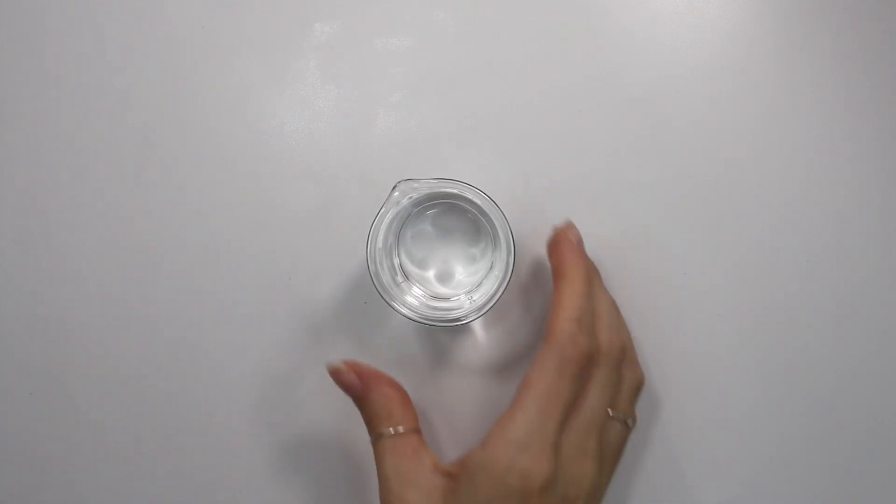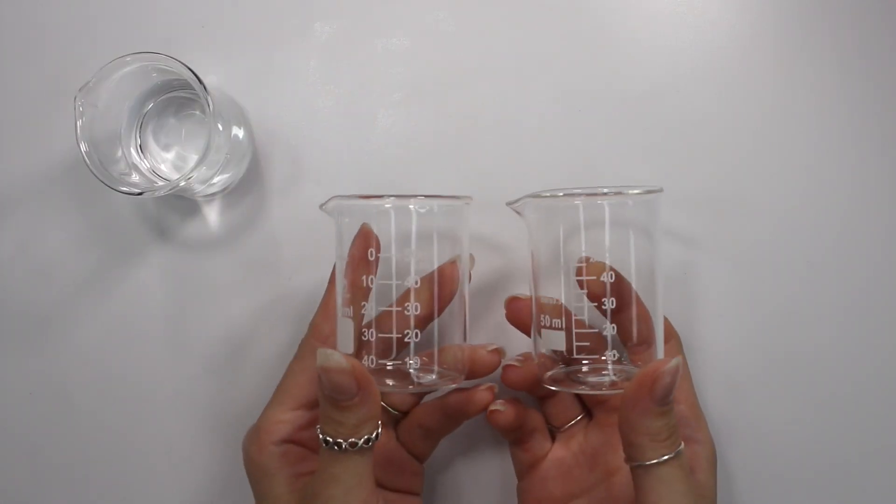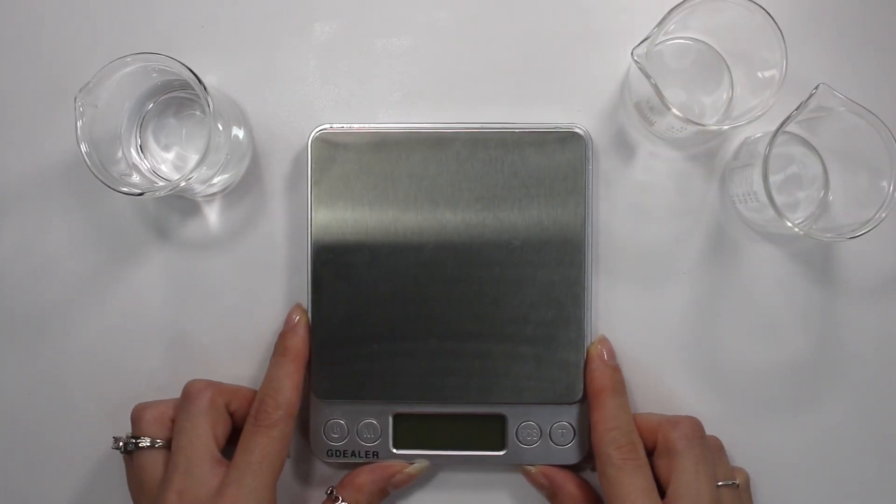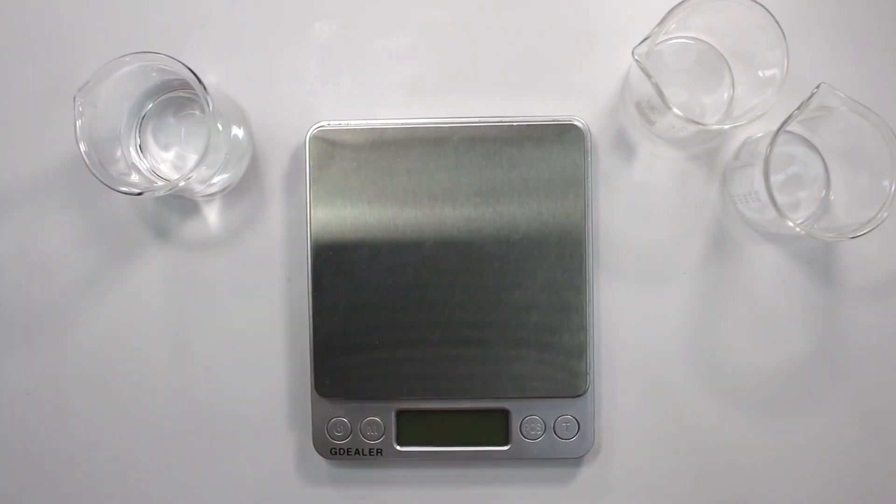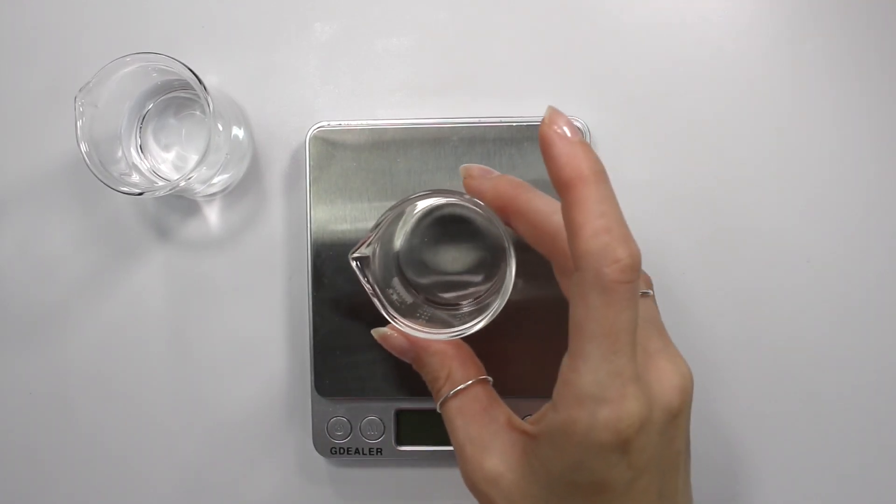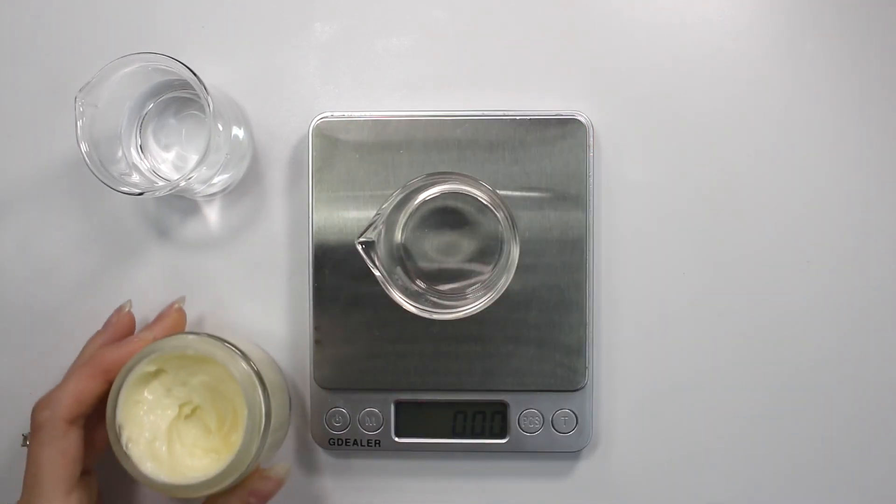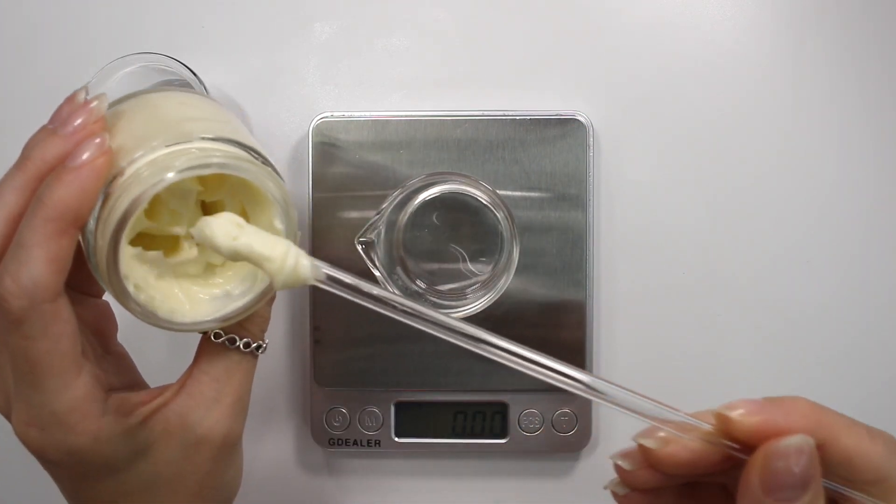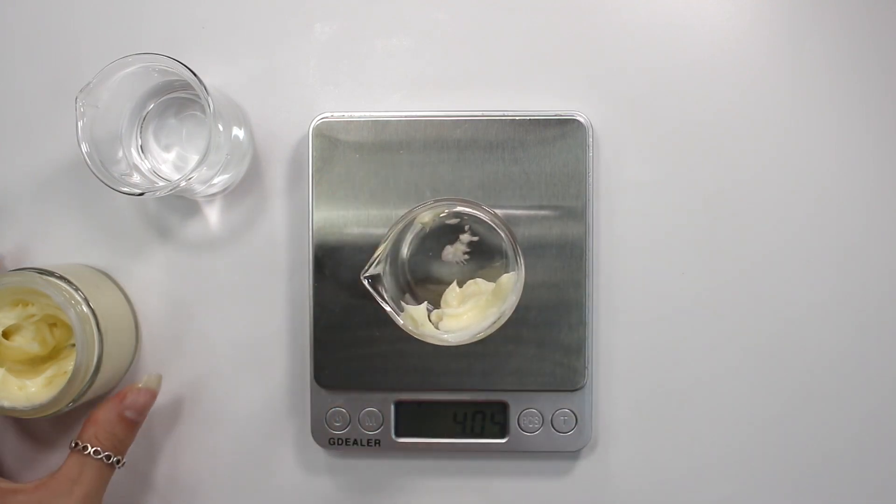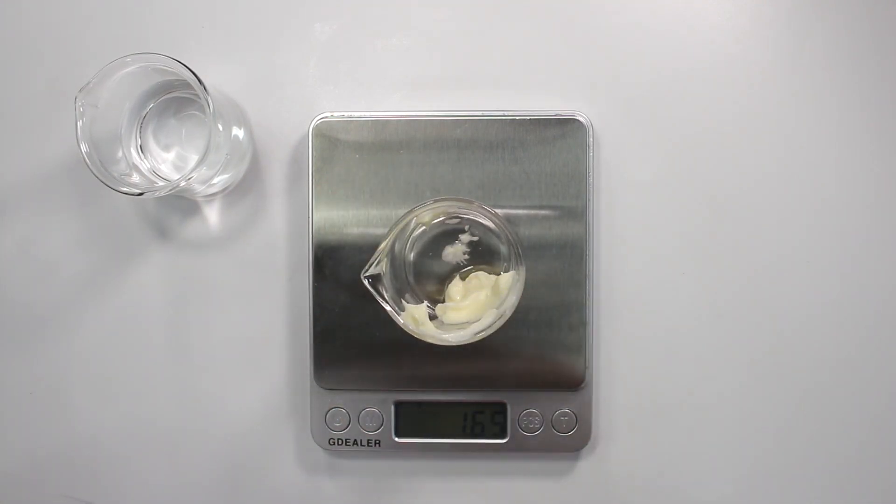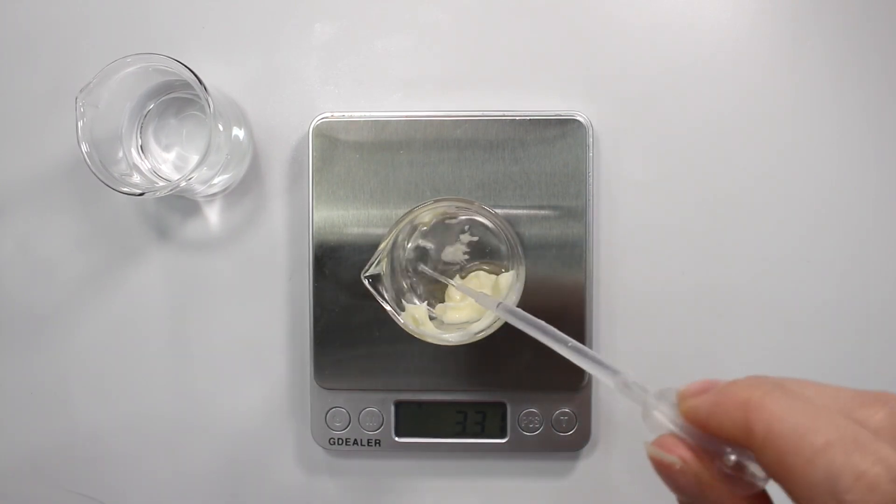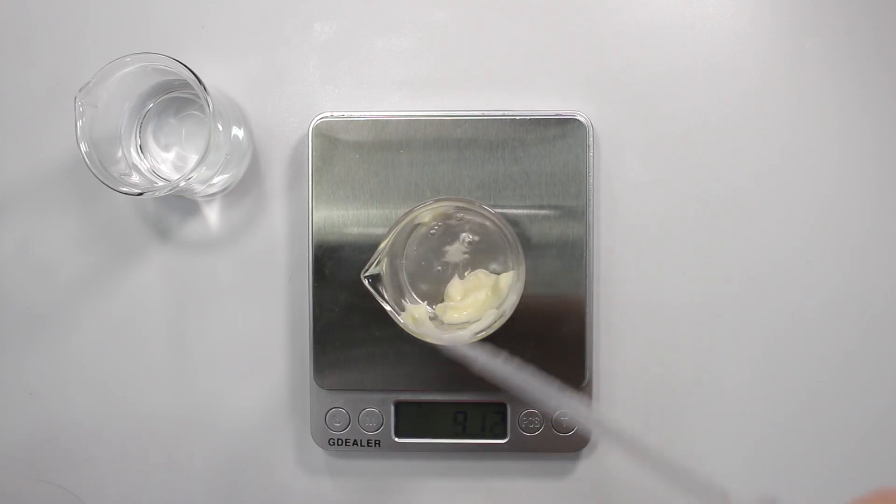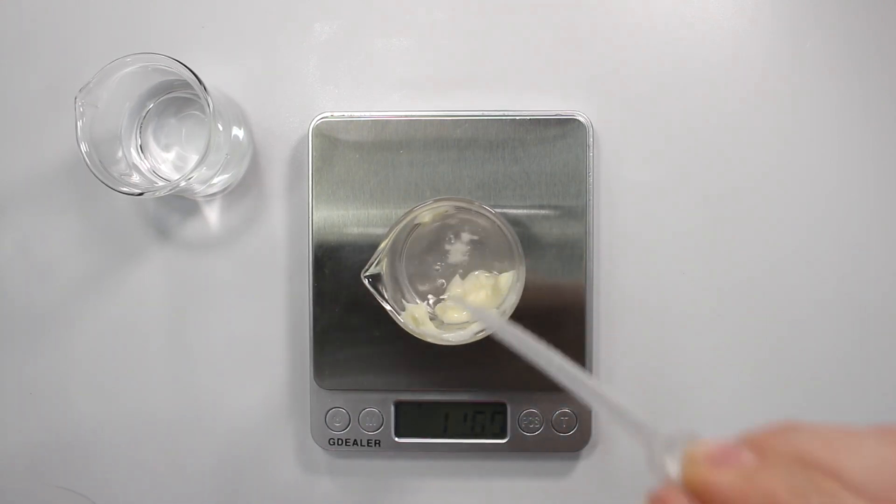So first you want to start off with just a small container, fill it with some distilled water. It can be your rinsing solution for your pH meters. And then I'm just going to be using a digital scale to weigh out 10% of my cream. First, I'm going to be showing you guys how to take the pH of a cream.